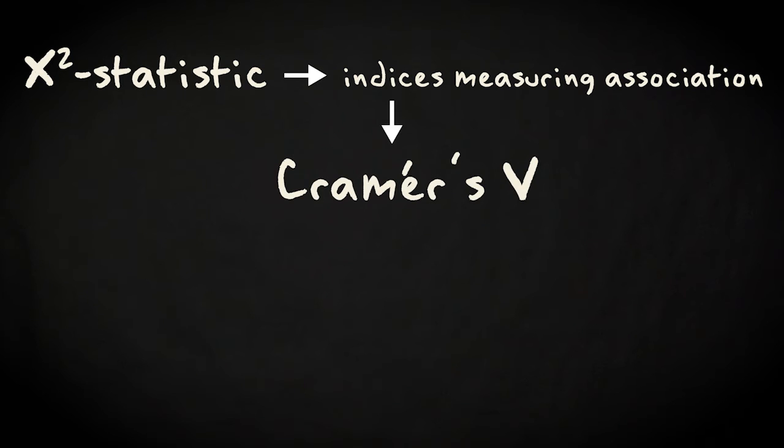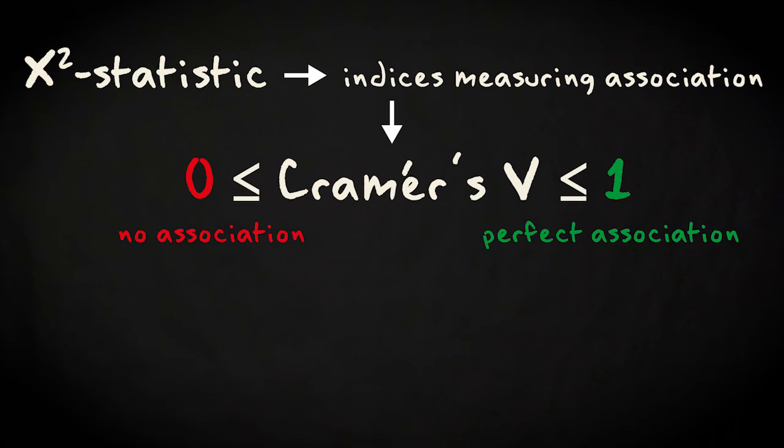Cramer's V is a popular one. It ranges from 0 for a case with no association to 1 for perfect association.